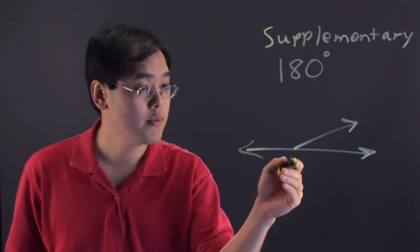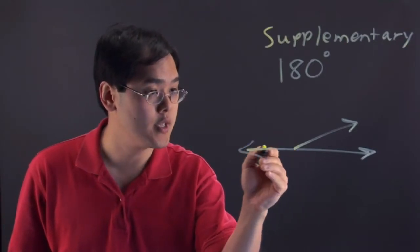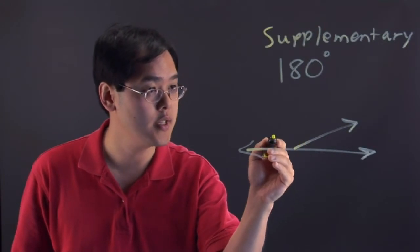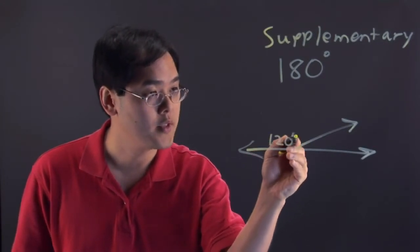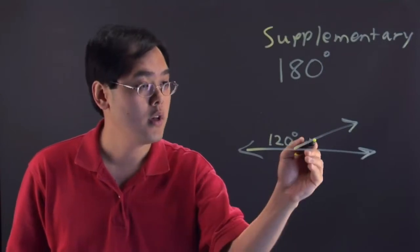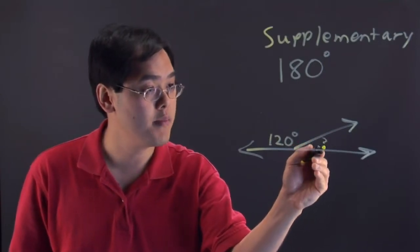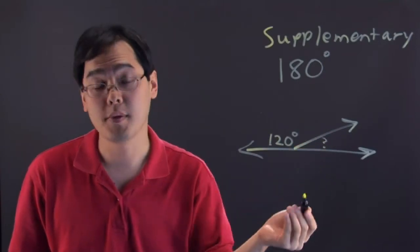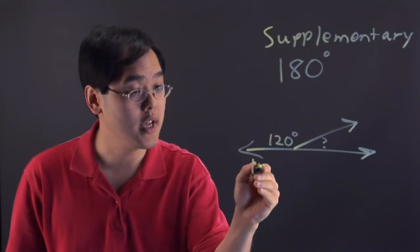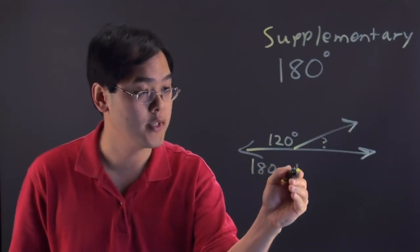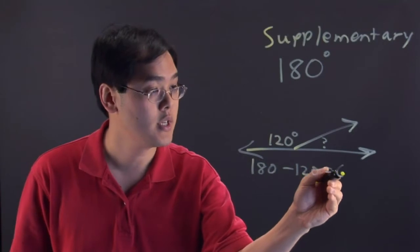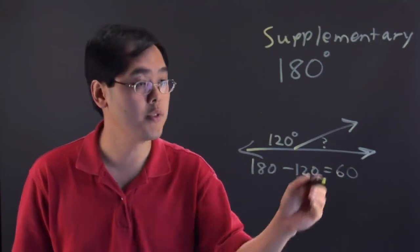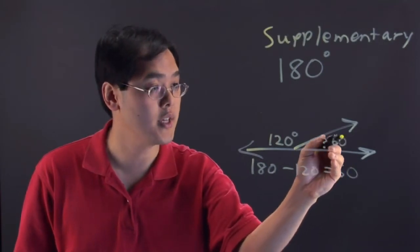Now suppose this particular angle, as you can tell, is greater than 90. Let's just say this is 120 degrees. We're asked to find out what is the measure of its supplement. All you need to do is take 180 minus 120 and that'll give you 60. And so the missing measure is going to be 60 degrees.